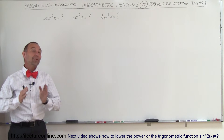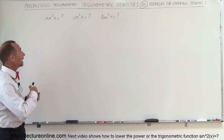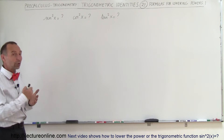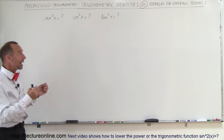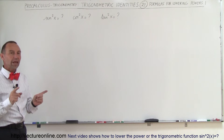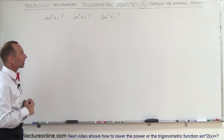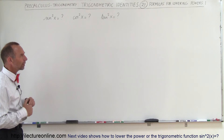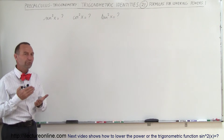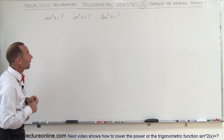Welcome to this lecture. We're going to learn how to take a sine squared, a cosine squared, or a tangent squared of x and reduce it down to a single power of x. These are called formulas for lowering the power.